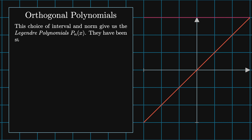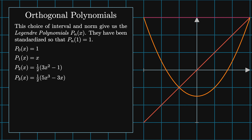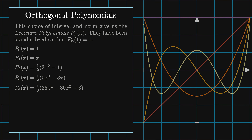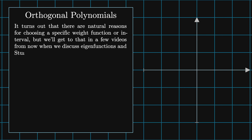This choice of interval and norm give us the Legendre polynomials pn of x. They've been standardized so that pn of one equals one: p0 equals one, p1 equals x, p2 equals one-half times three x squared minus one, p3 equals one-half times five x cubed minus three x, p4 equals one-eighth times thirty-five x to the fourth minus thirty x squared plus three. It turns out that there are natural reasons for choosing a specific weight function or interval, but we'll get to that in the next few videos when we discuss eigenfunctions and Sturm-Liouville theory.